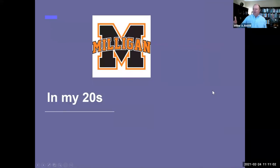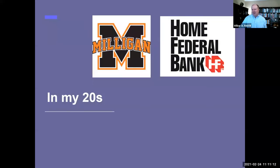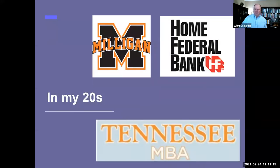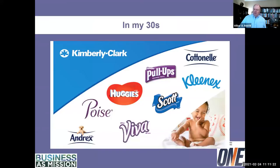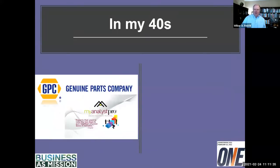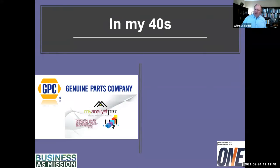I was the prodigal son. I went to Milligan to study business because Johnson didn't offer anything in business at the time. Then I started to work at Home Federal Bank here in Knoxville — my first job out of college — and then got an MBA from Tennessee in finance. In my 30s, I went to work for Kimberly Clark Corporation. A lot of people don't know Kimberly Clark's name, but it's Kleenex, Huggies, Kotex, Depend, Scott Paper, and all these brands that you see. In my 40s, I went to Genuine Parts Company, which is another company that nobody hardly recognizes.